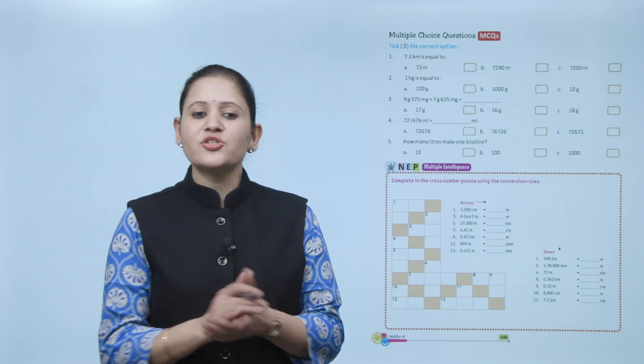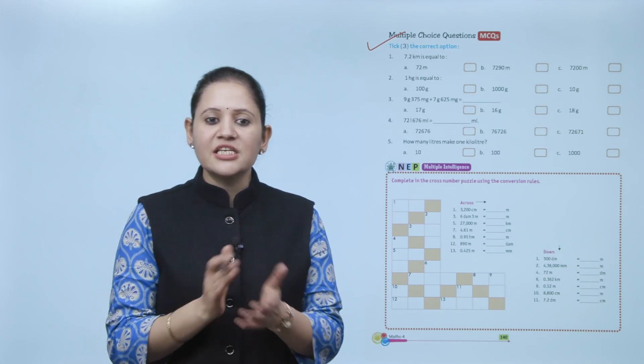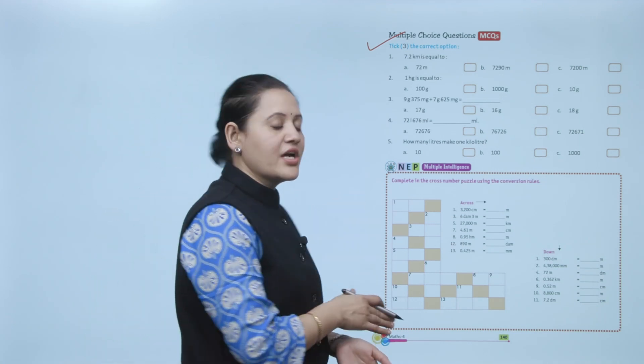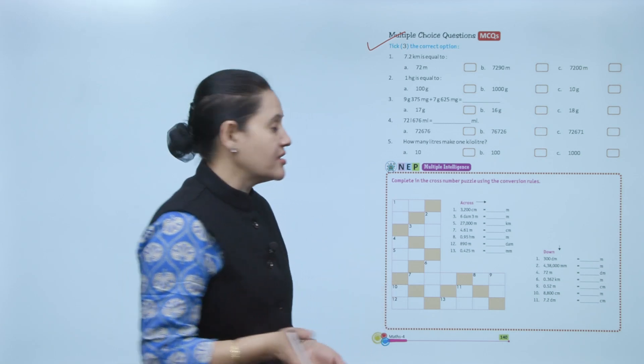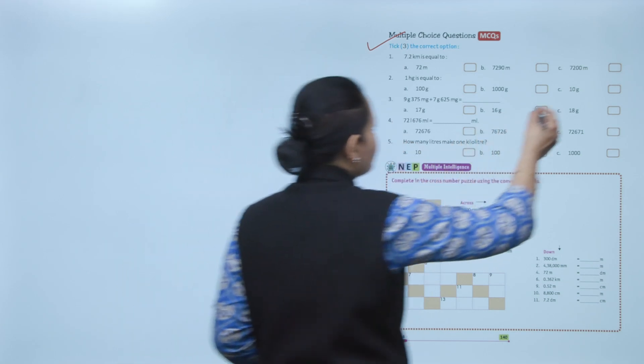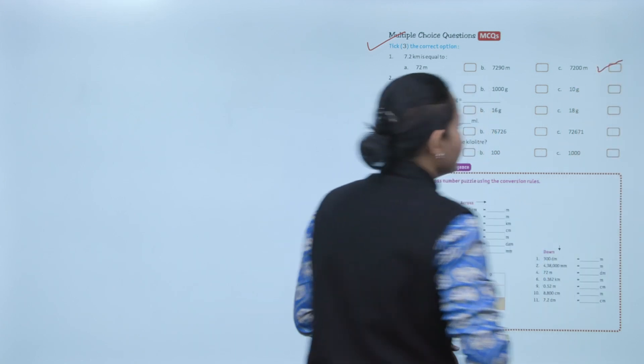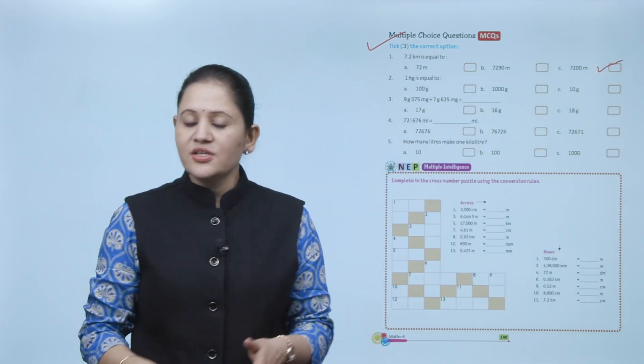Next is multiple choice questions. Find the correct answer: 7.2 kilometers equals how many meters? Since 1 kilometer equals 1000 meters, multiply 7.2 × 1000 = 7200 meters. Option C is the correct answer. Here we end the chapter — I hope you understood it well. Now practice it.